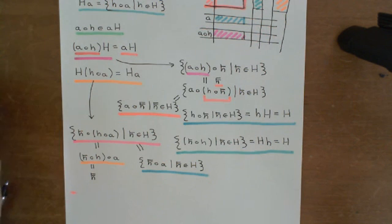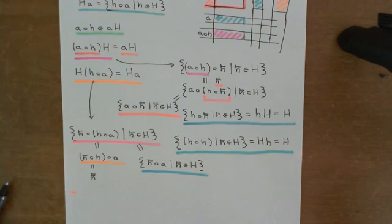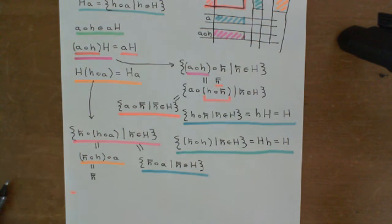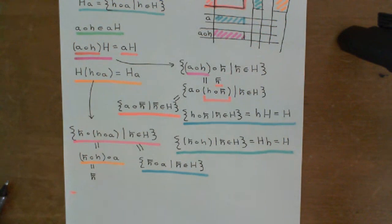So basically what I have just shown you is that you can use any element of these left and right cosets of H under A to generate it. It didn't have to be that element little a — little a was an arbitrary element of these cosets and you could pick whichever element you wanted and you would have generated the same left and right cosets. In the next video what we will do is look at an example of a coset, and then finally we'll go on to Lagrange's theorem.